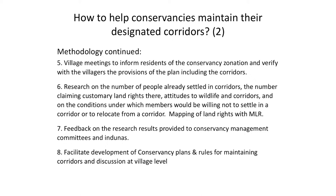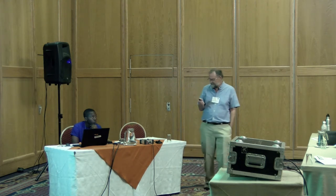We held village meetings to inform residents of the conservancy's own zonation. We carried out research looking at attitudes to wildlife, to corridors, and the people claiming customary rights — including whether people would be willing not to settle in a corridor. The results of this research were fed back to the conservancy committees and the traditional leaders, and from there we facilitated the development of conservancy plans and rules for maintaining the corridors, then held discussions at the village level.